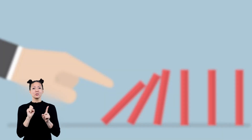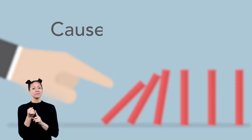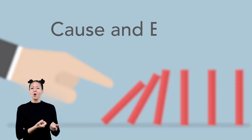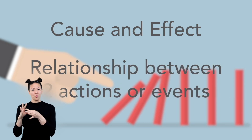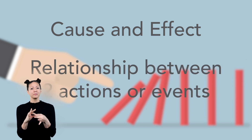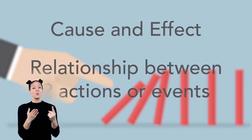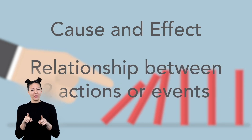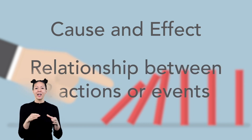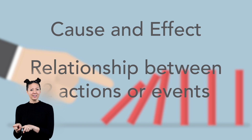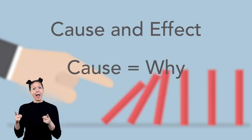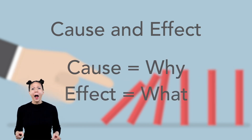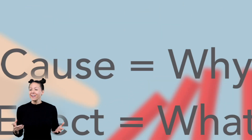Both of those situations deal with something called cause and effect. Cause and effect is the relationship between one action or event and another action or event that causes why something happened. The effect is what happened.